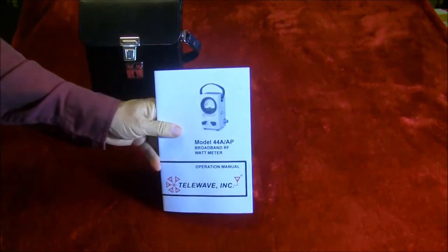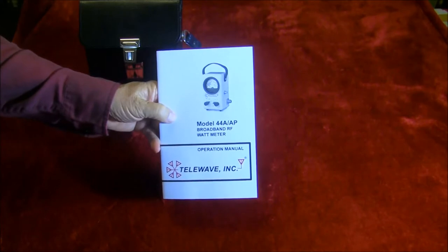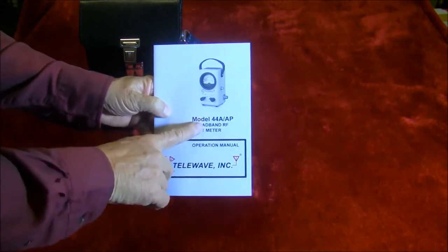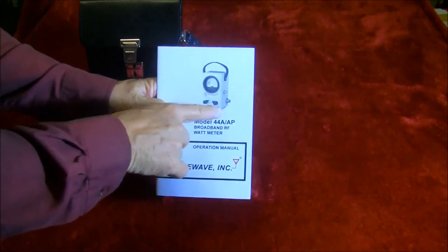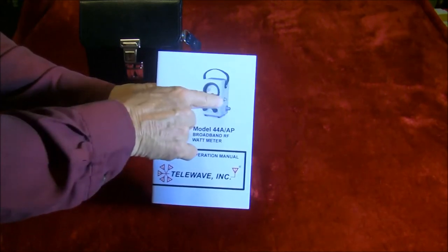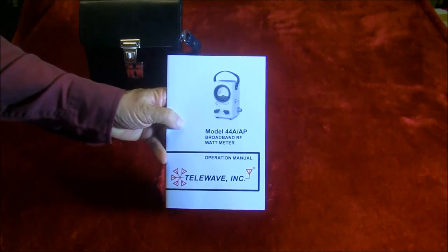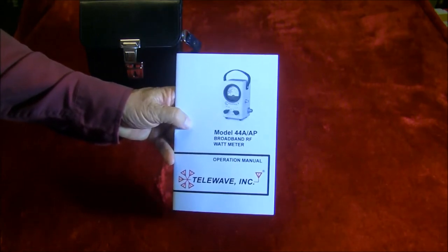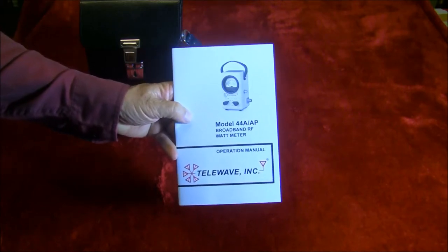The booklet gives you details of how to use this device. We have a Model 44AP, which not only has the input and output here, but also a tap-off at about 40 dB down to go to a spectrum analyzer or modulation meter for monitoring modulation.